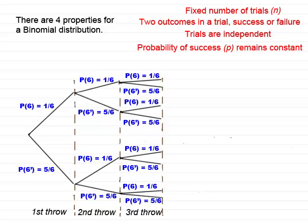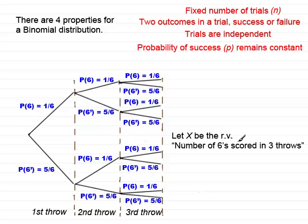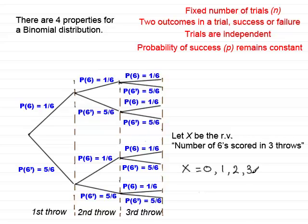Now when you have a binomial distribution, I want to look at what we call a random variable X. I've let X be the random variable — RV for short — which is the number of sixes that I score in these three throws. That random variable X could be zero: I don't score any sixes, going down the path of not a six in the first throw, not a six in the second, not a six in the third. Or it could be that I score one six, and there are many ways of scoring one six. I could also score two sixes, or three sixes. So the random variable X takes on the values 0, 1, 2, and 3 for this particular problem.